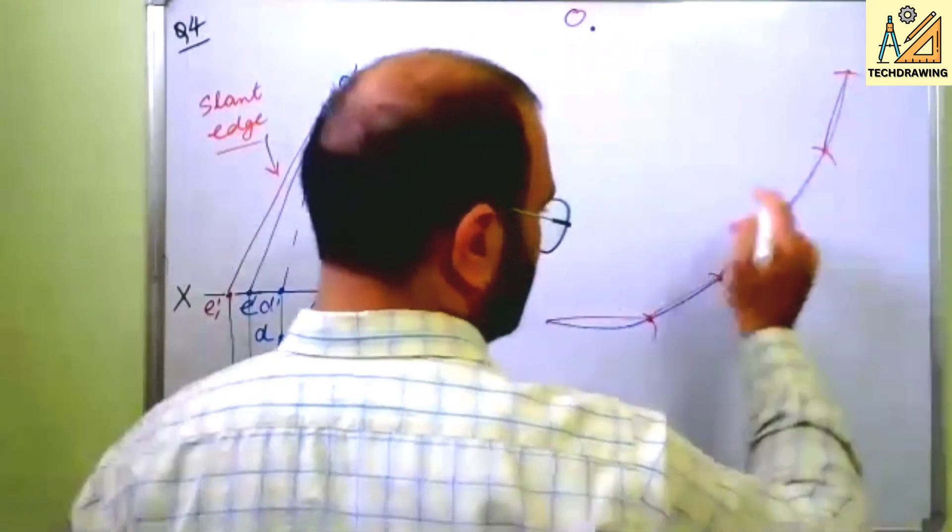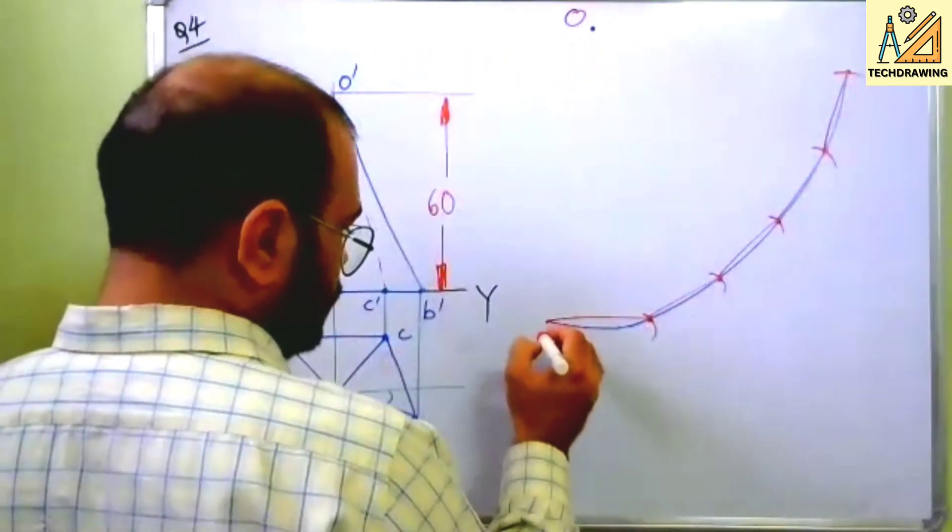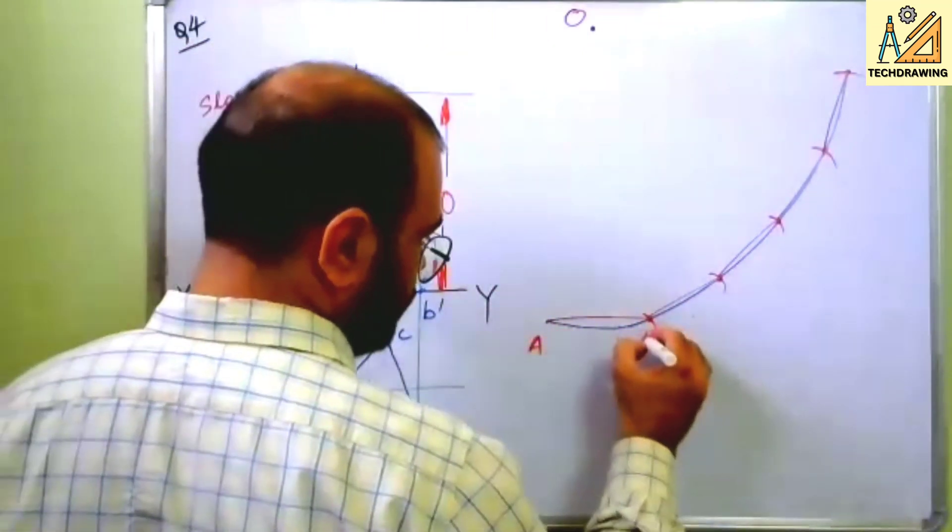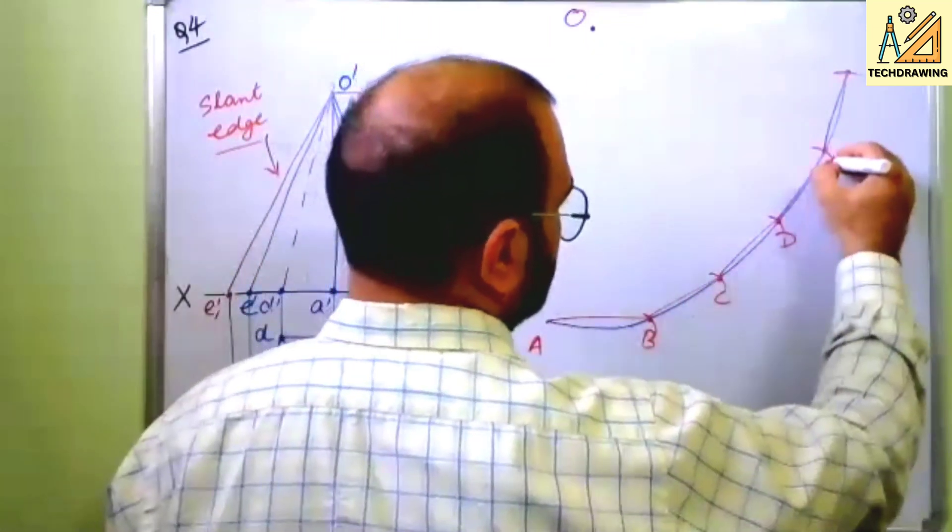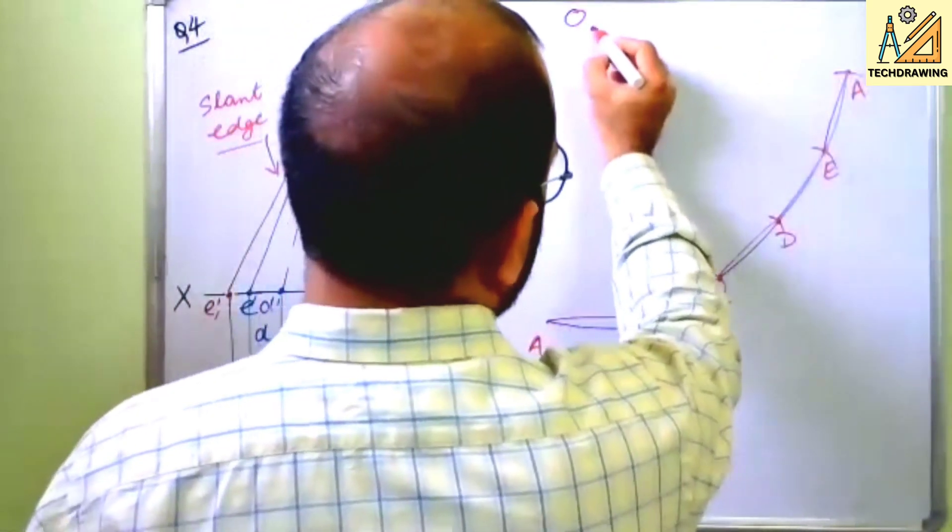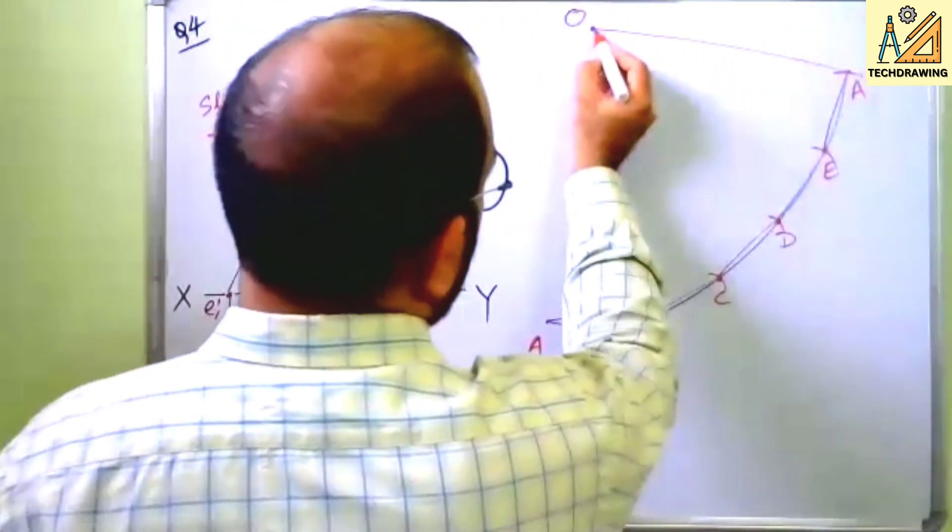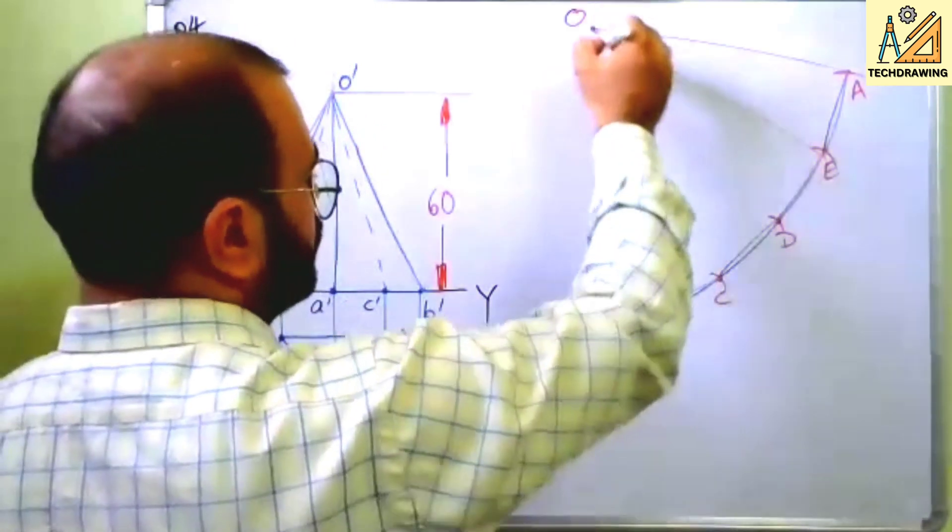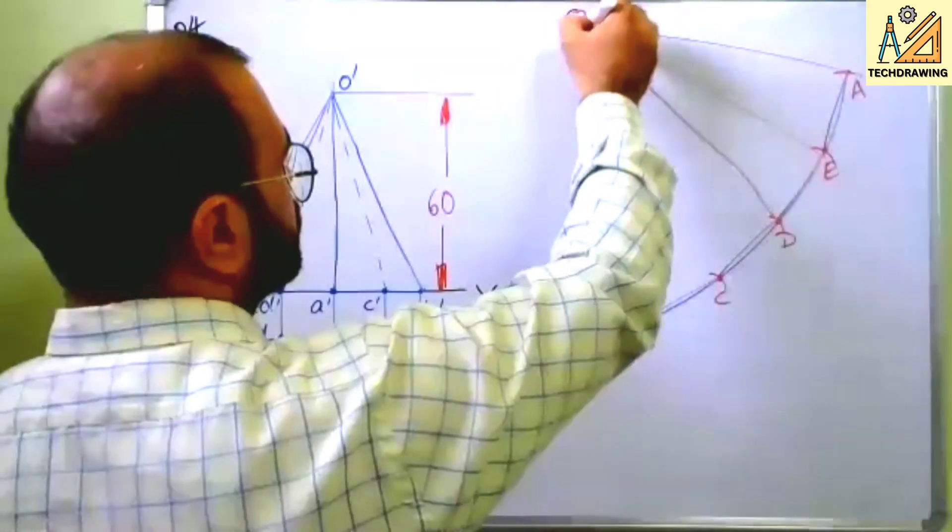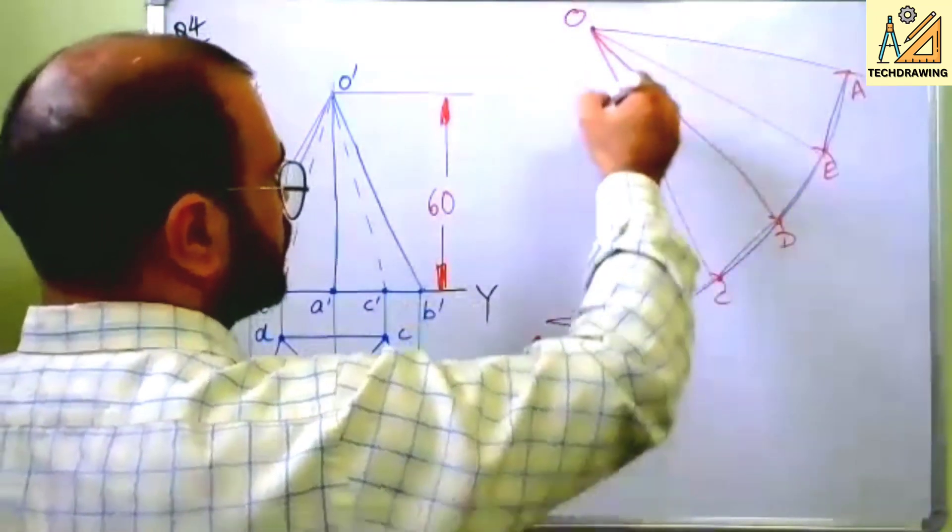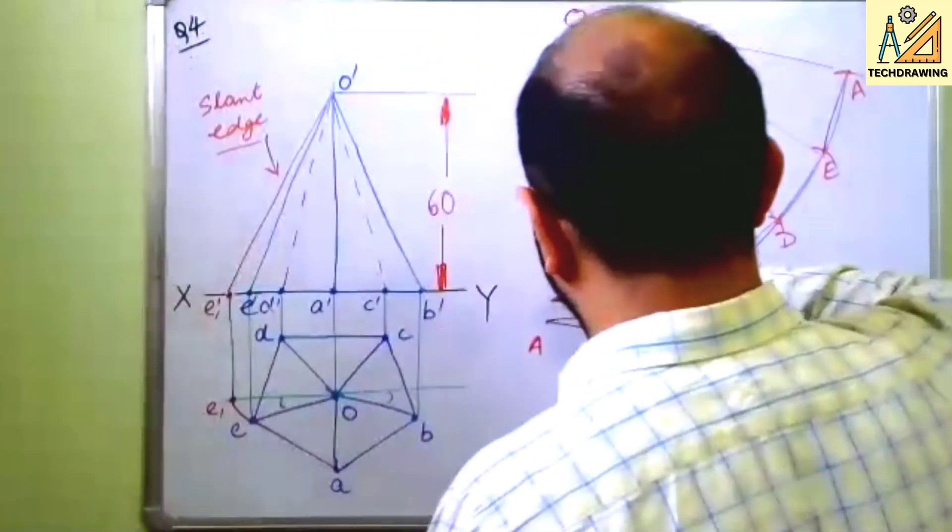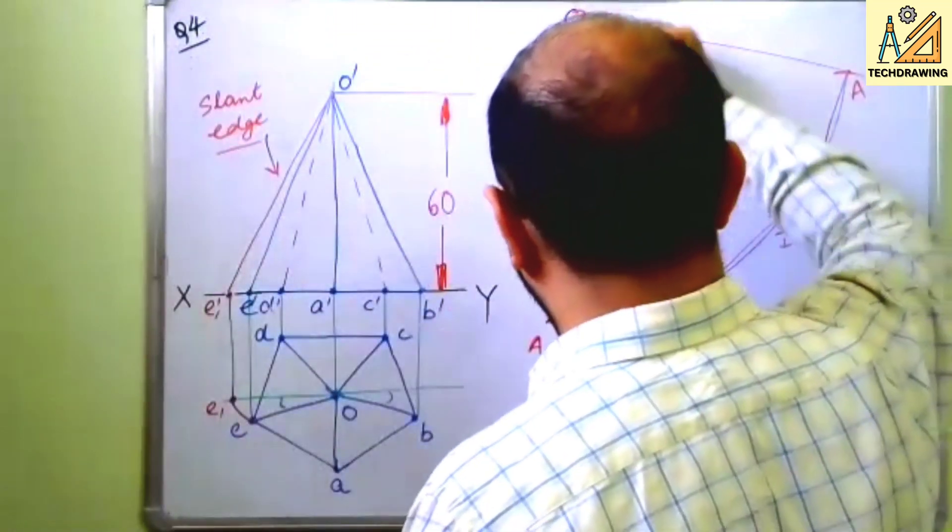This will be capital O. Remember you have to draw the lines here. I am cutting it from O-A, so this will be A, B, C, D, E and again A. Join O-A, O-E, O-D, then O-C, O-B, then O-A, like this.